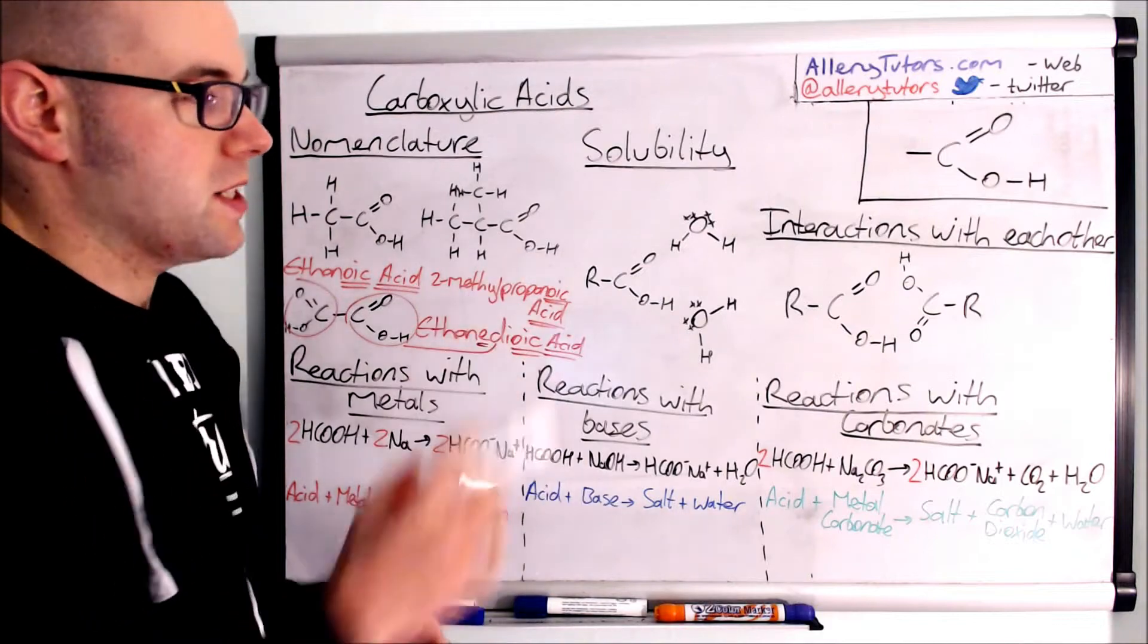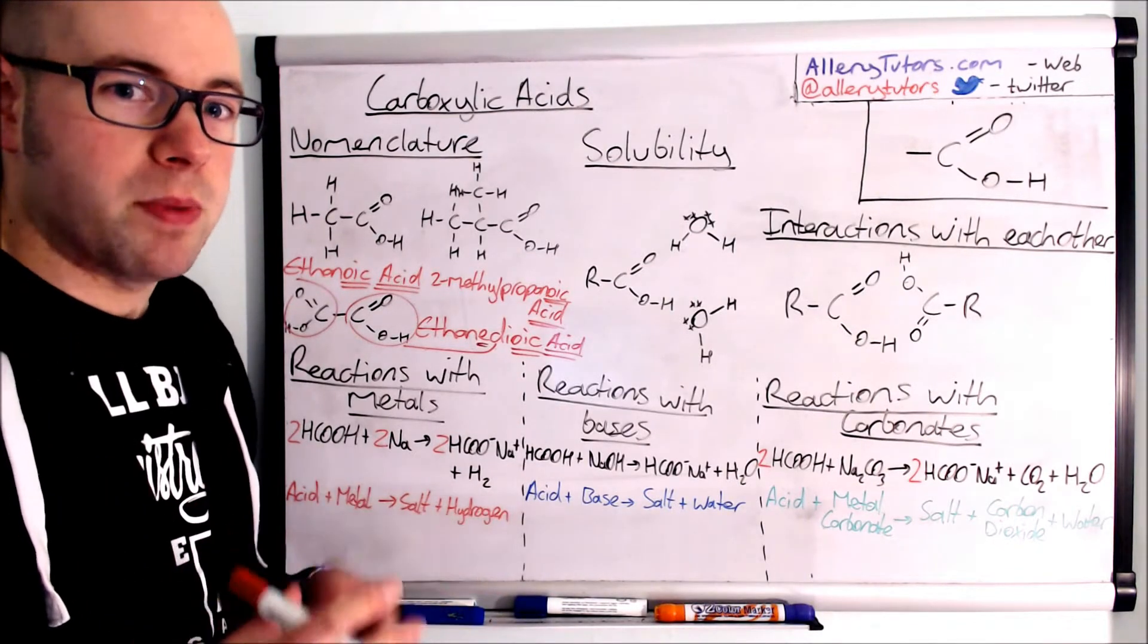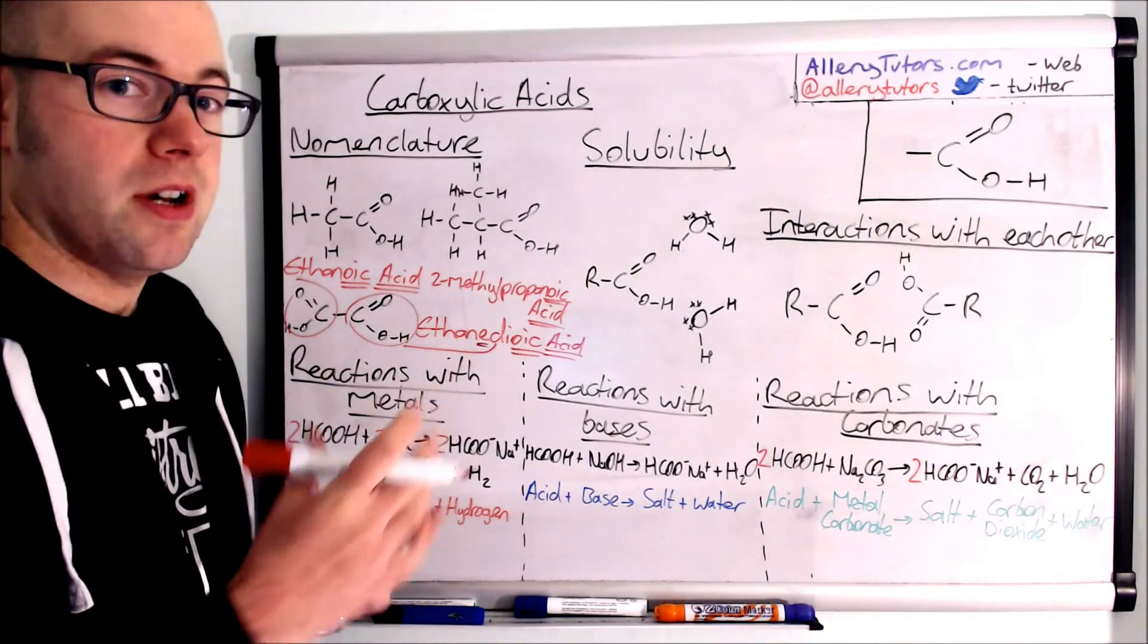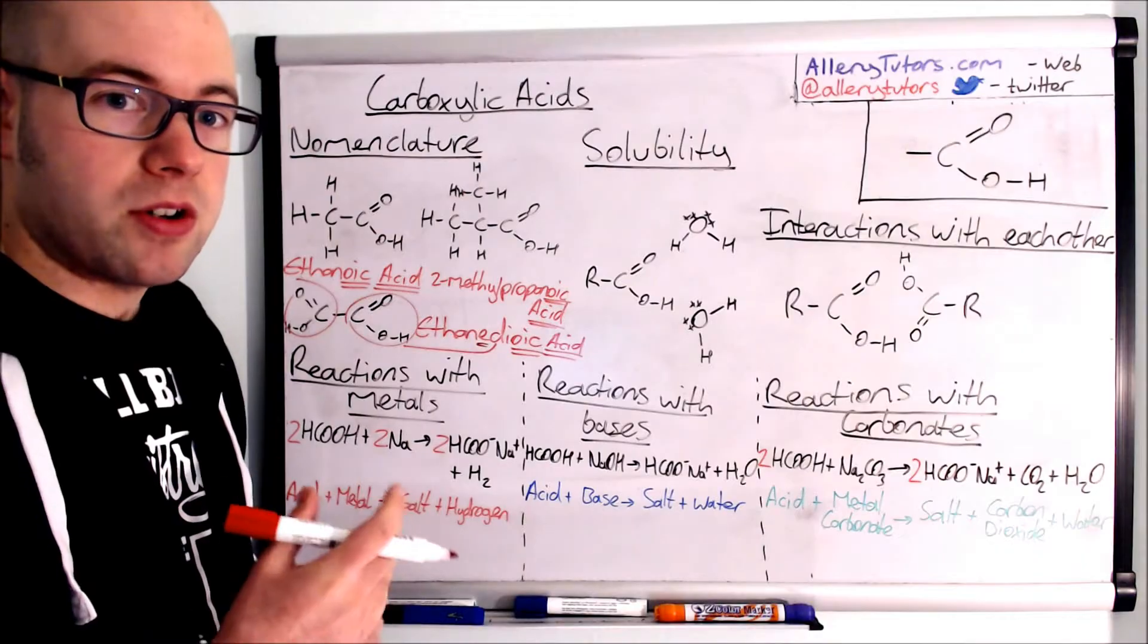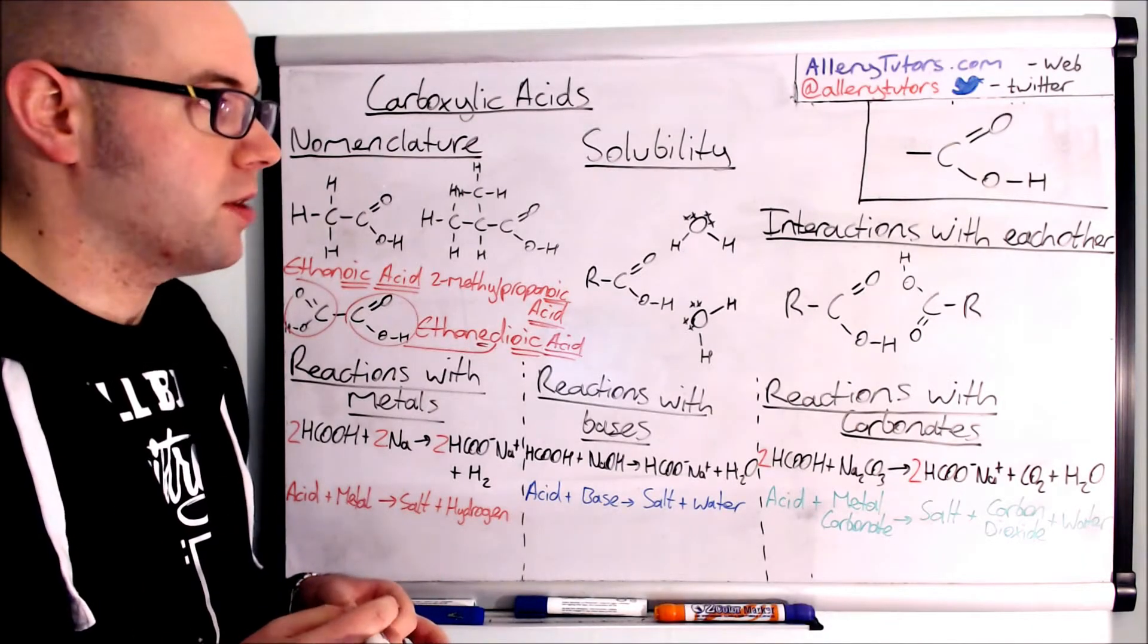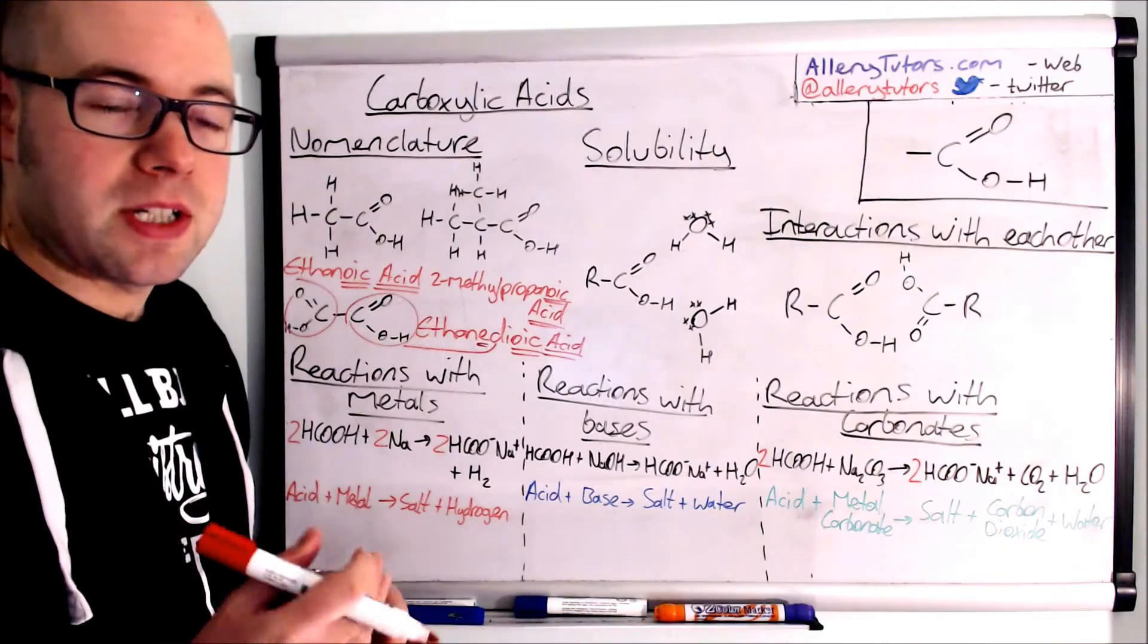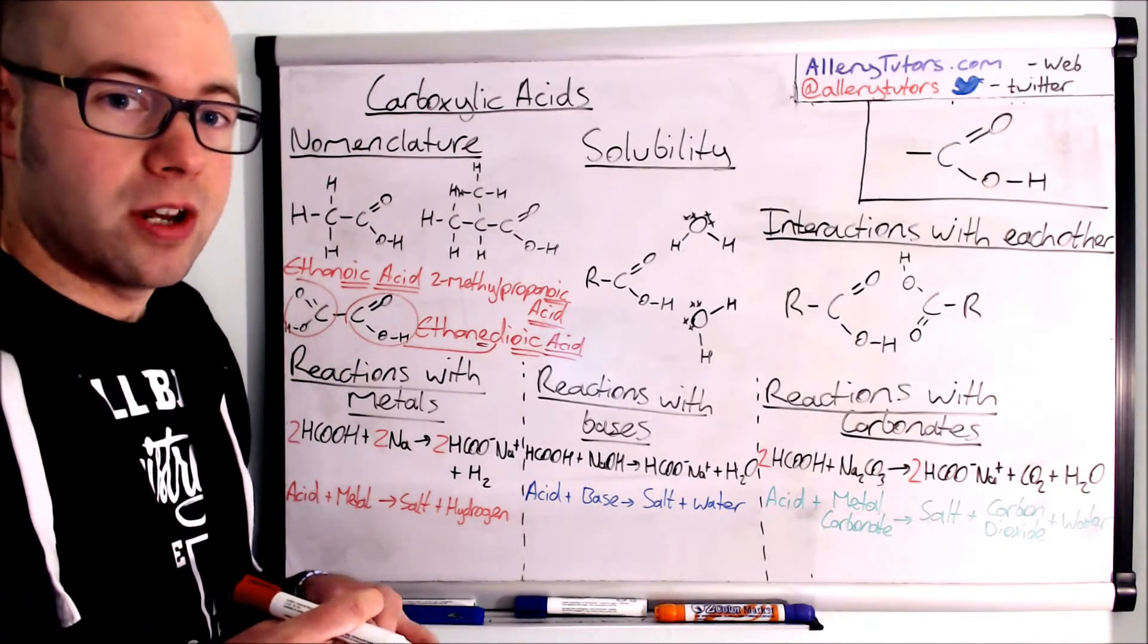Okay so the next bit is solubility. Now for anything to dissolve it needs to hydrogen bond with water if it's going to dissolve in water. So because carboxylic acids have an oxygen in there and hydrogen it can hydrogen bond with other molecules. So we say that short chain carboxylic acids are actually soluble.